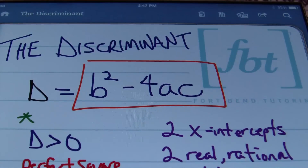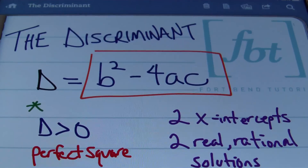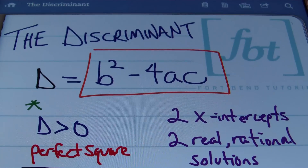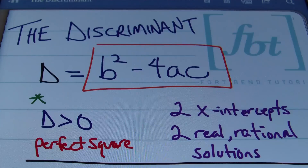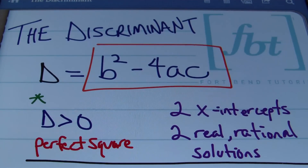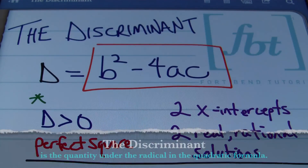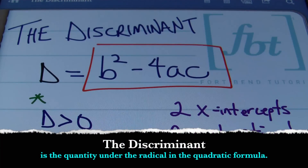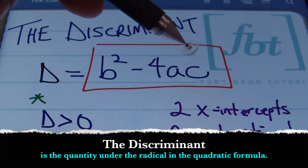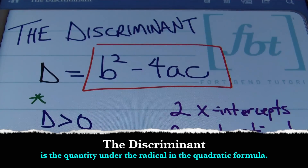Finding the discriminant when dealing with quadratic equations — the discriminant is actually just a small portion of the quadratic formula. It's only the radicand; specifically, it's the b squared minus 4ac portion of that formula.